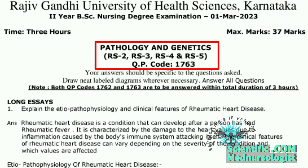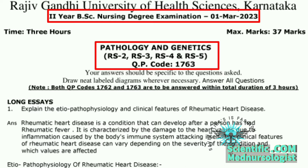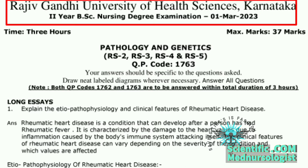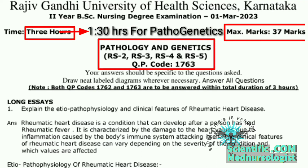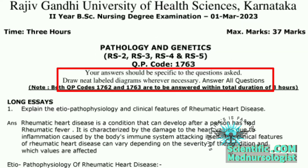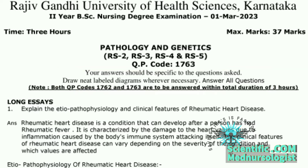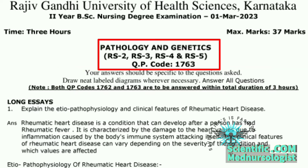This is the pathology and genetics question paper for BSc nursing secondary students of RGUHS, which is of 38 marks in one and a half hours. It is for RS2, RS3, RS4, RS5 batches and QP code is 1763. Instructions are the same as always: answer all questions, draw diagrams, and write specific answers. The question paper consists of three parts.